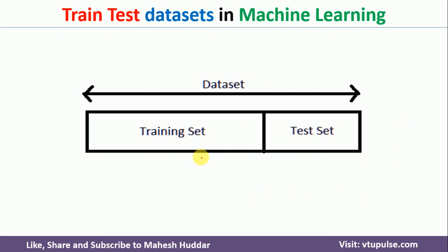Given a dataset, the dataset is divided into two groups. One is called the training set, another one is called the testing set. With the help of the training set, we will train our machine learning model. Once training is over, the model is tested with the help of the testing set.